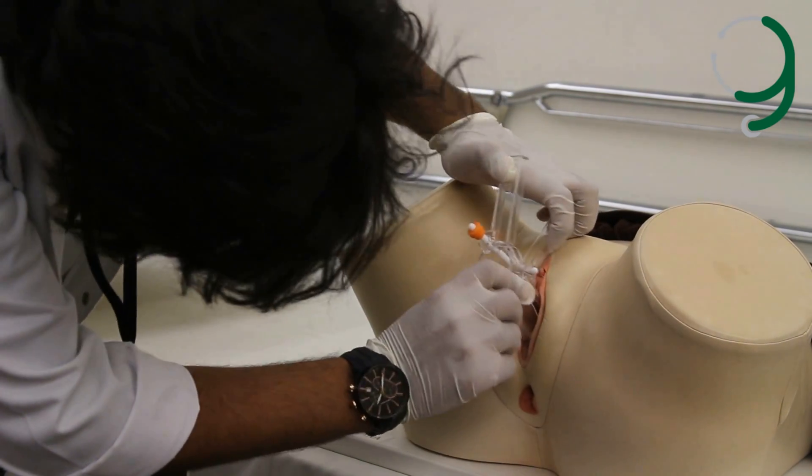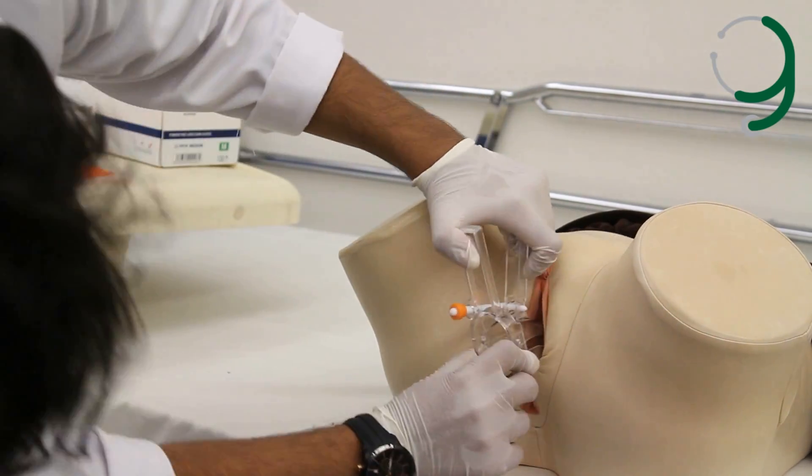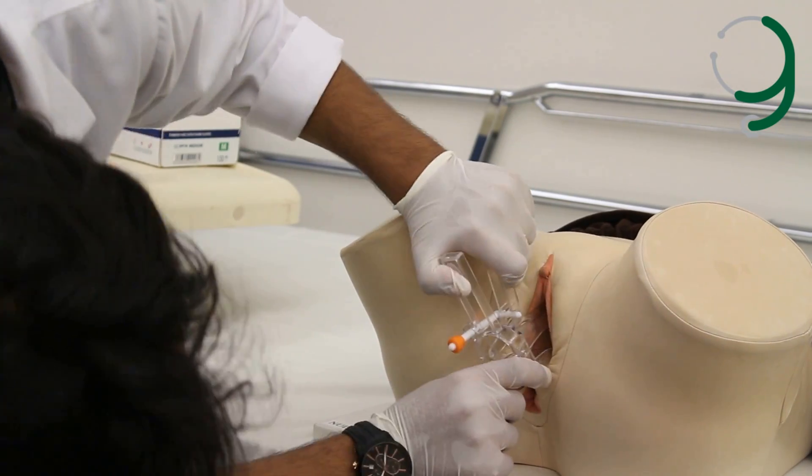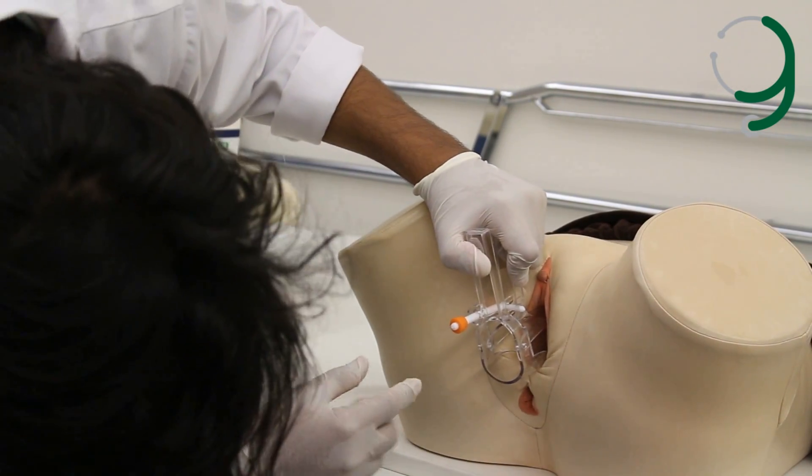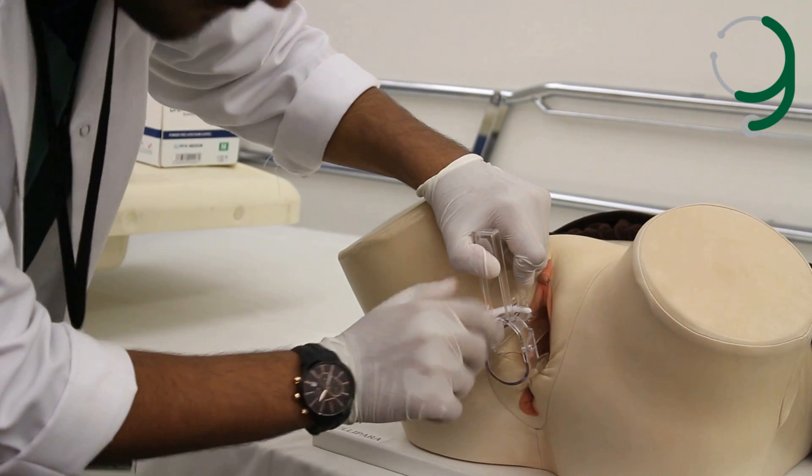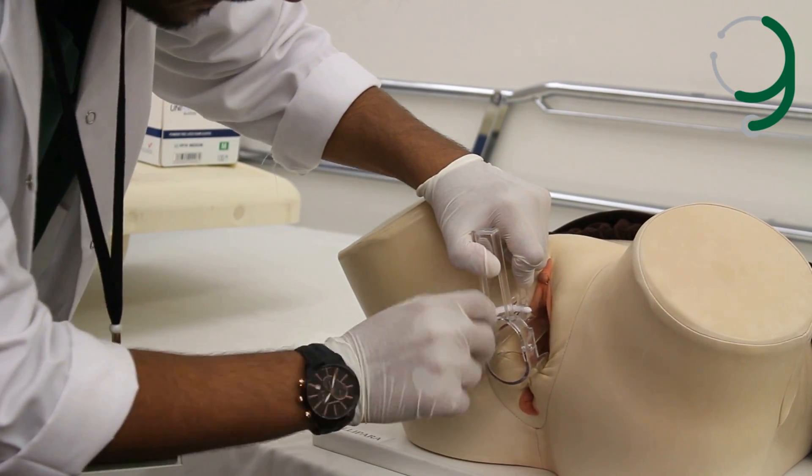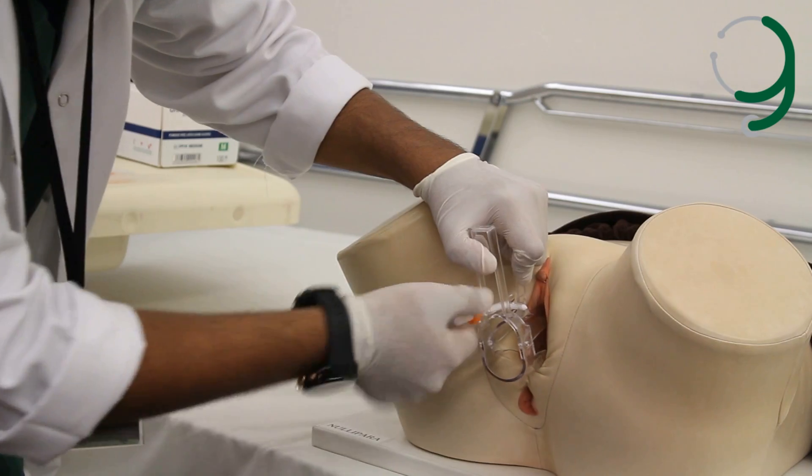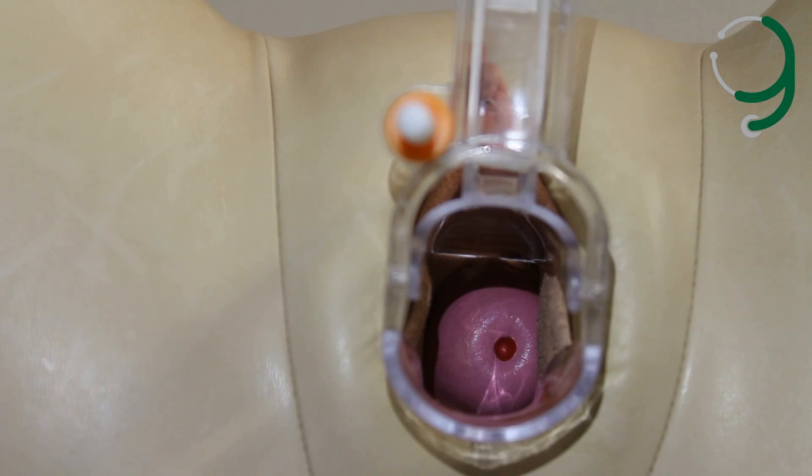Then you look for the cervix. Once the cervix is in view, you close the valve so that the blade doesn't close when you leave it. Like this. Once the cervix is in view, you check for swelling, erythema, erosion, or bleeding. And most importantly, you check for polyps, which is a sign of malignancy.